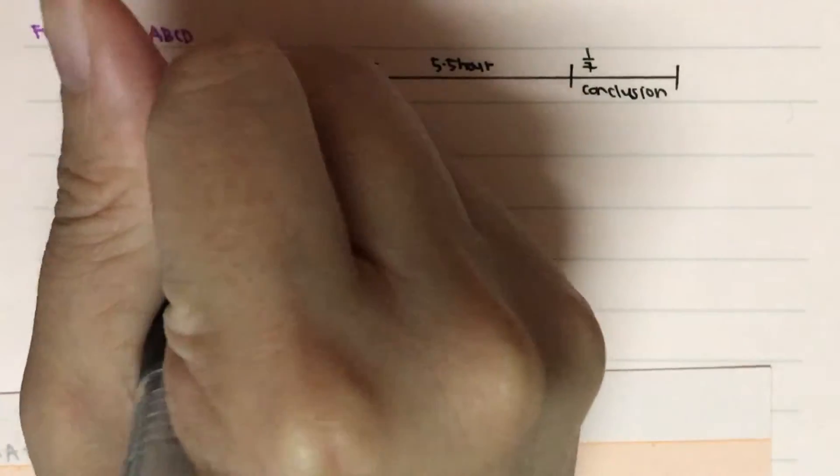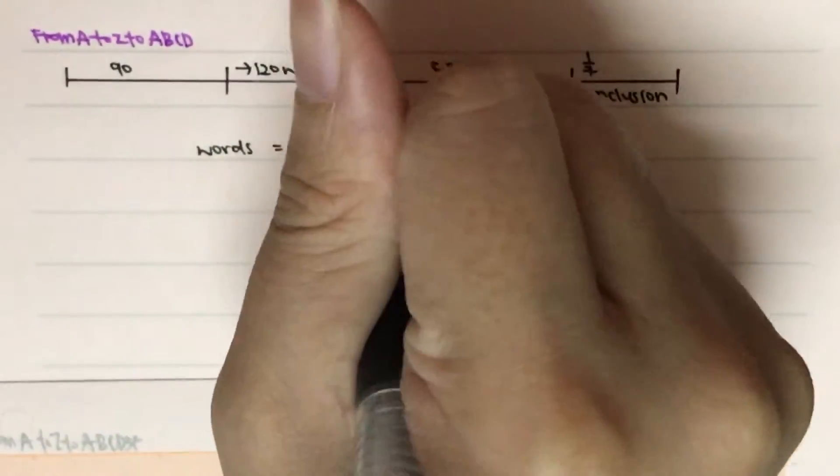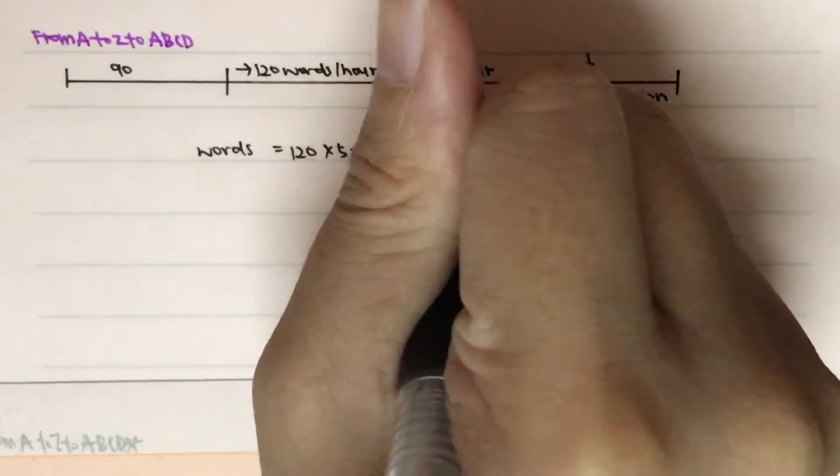So we can start. So this is the essay. So we just write the words. This is the normal essay which is over here. It will be 120 words times 5.5 hours. This will actually give us 660 words.